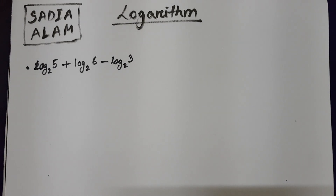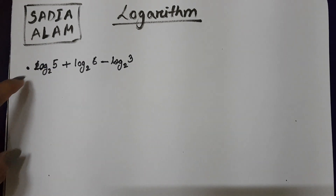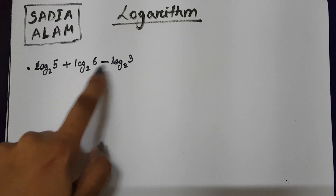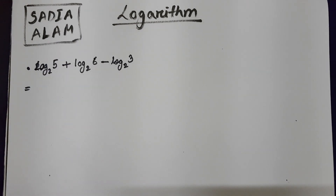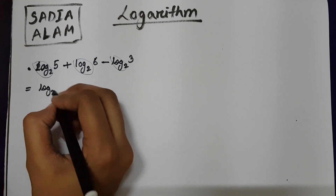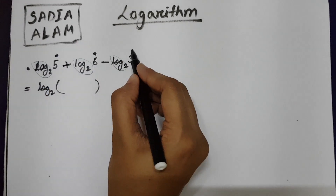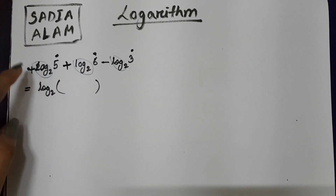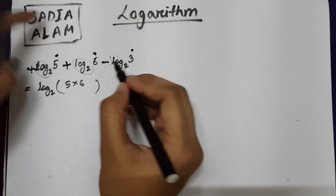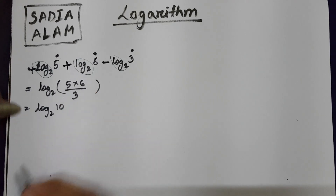Next comes the addition and subtraction rule. Suppose you have several log terms which you need to combine into one. If you have 3 terms of log, all with a base of 2, since these 3 terms have log base 2 as common, you write log base 2, then the numbers are 5, 6, and 3. The terms with a positive sign — the numbers are multiplied. The term with a negative sign — you divide that term. So this becomes log 10 base 2.